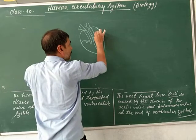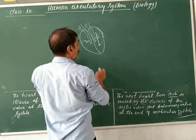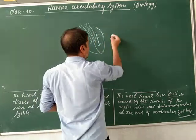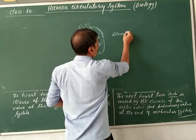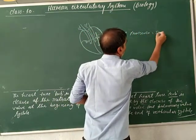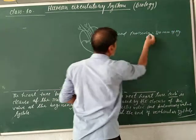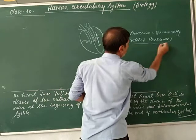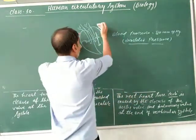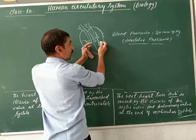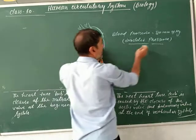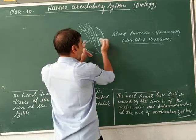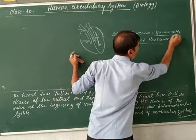Oxygenated blood passes to the ventricles. At this time, the blood pressure inside the ventricles is equal to 80 millimetres of mercury. This is the diastolic pressure. Diastolic means the ventricles get relaxed. When the ventricles are relaxed, the pressure inside the ventricles is 80 millimetres of mercury.